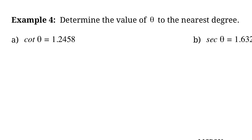In the next examples, we're determining the value of angle θ. We're given that cotangent θ equals 1.2458. Since cotangent is the reciprocal of tangent, cotangent θ equals 1 over tan θ, which equals 1.2458. Rewriting that as a fraction — 1.2458 over 1 — and since we don't have a cotangent button, let's flip both fractions to use the tan button.